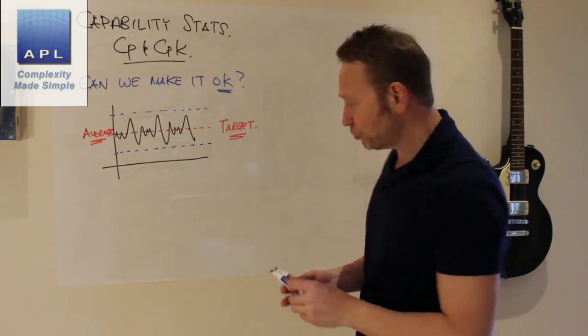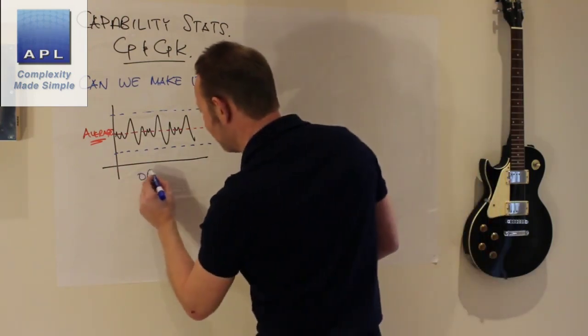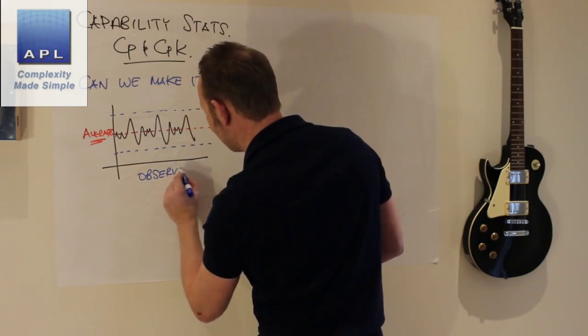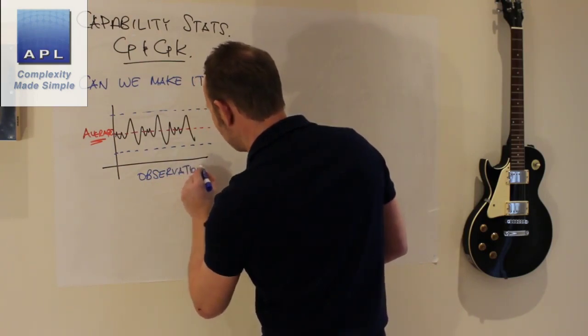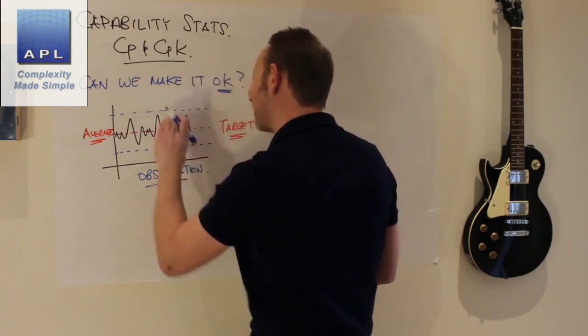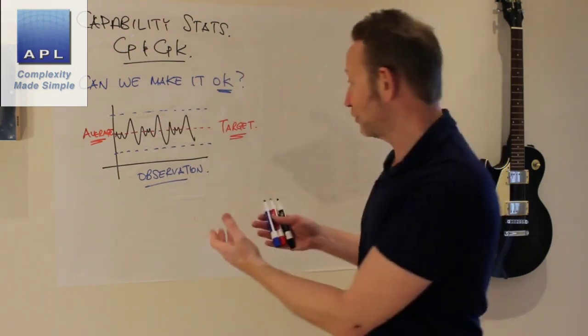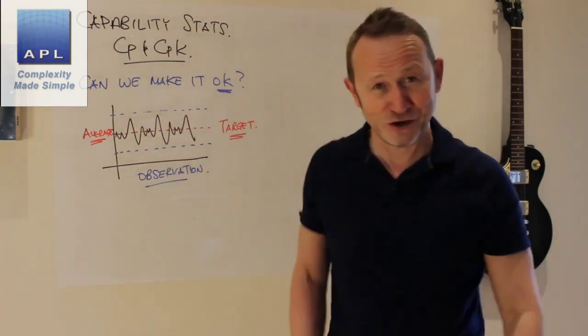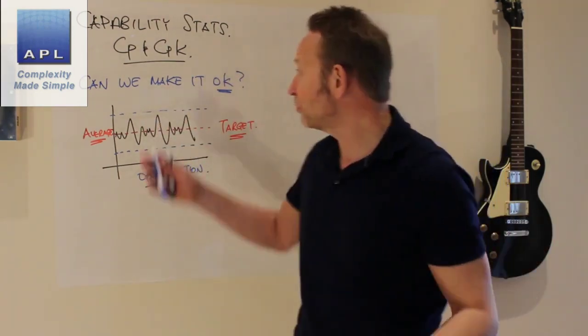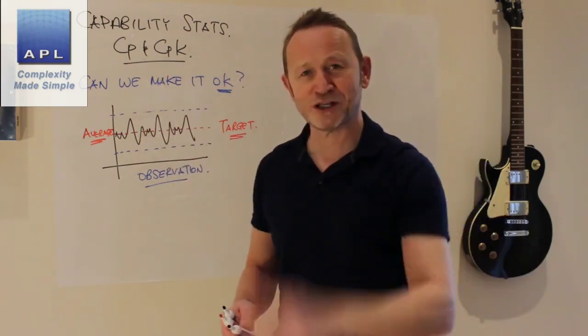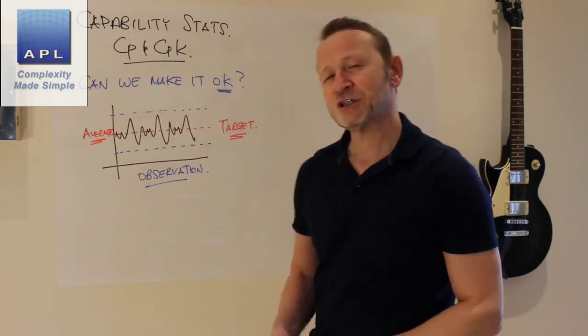Now if you just use observation alone, use your common sense and just go for observation, what you're basically going to assess now is: yeah, I'm fitting inside the tolerance, I'm hitting the target I want to hit, what's good with the world, can we make it okay? Yes, and away you go. Now typically there's two mistakes that are being made here.